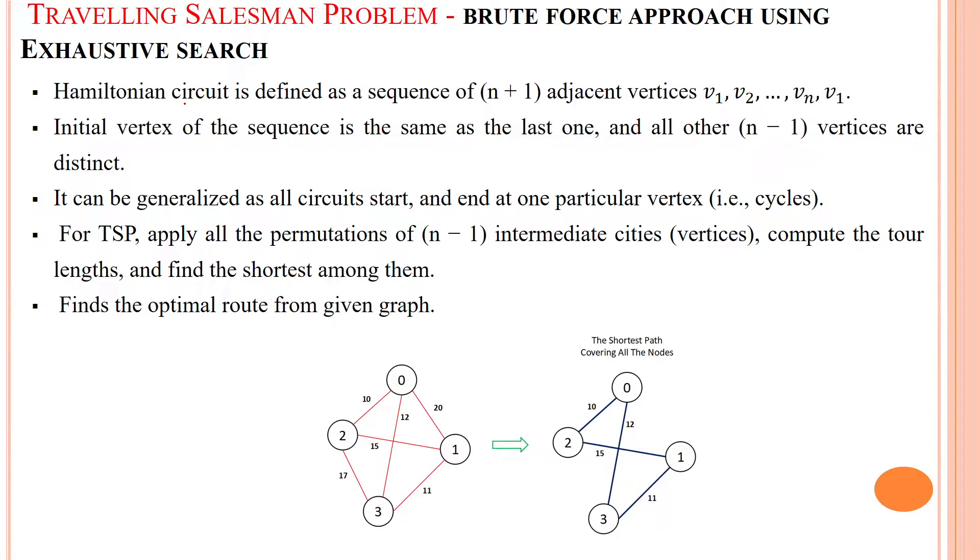Now here the Hamiltonian circuit is defined as a sequence of n plus 1 adjacent vertices which are represented as the starting point v1, visiting next point and visiting the next one until n number of cities. That means he is starting from the 0th city and he is visiting 2, 1, and 3. Finally he is returned back into the home city.